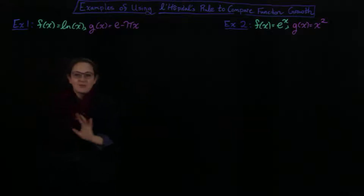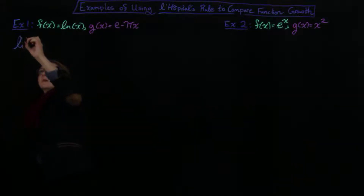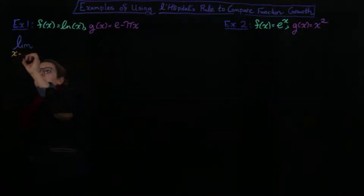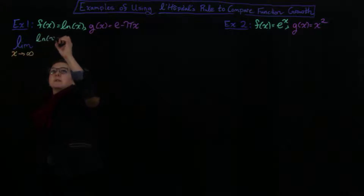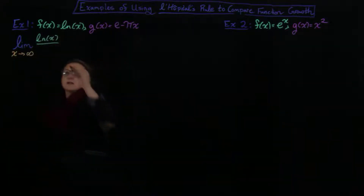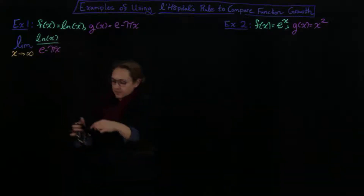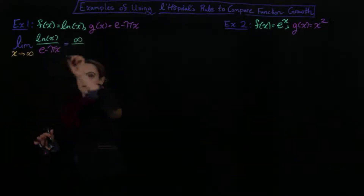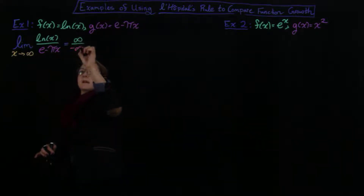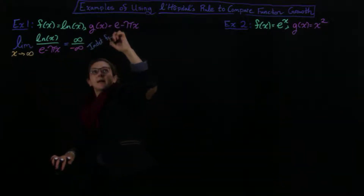The first step of using L'Hôpital's Rule is to check that you have an indeterminate form. We're going to compute the limit as x goes to infinity of the ratio of the two functions: the natural log of x divided by e minus pi x. If you take the limit of the top you get infinity, and the limit of the bottom gives minus infinity. That indicates we do have an indeterminate form, so we can apply L'Hôpital's Rule.